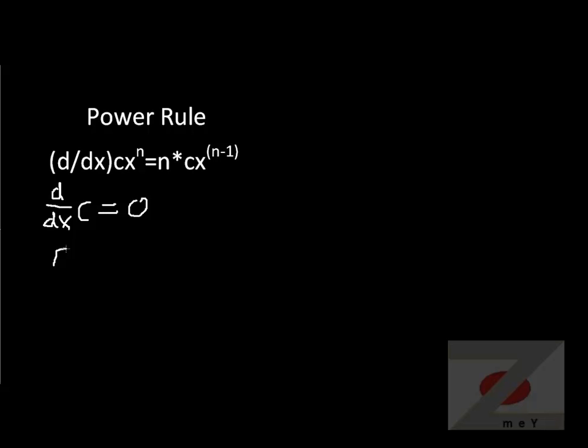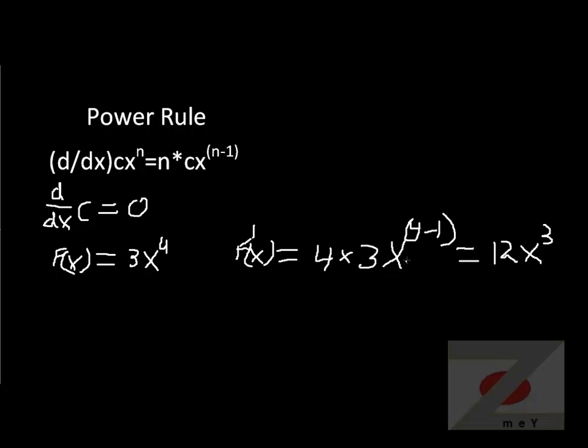Now let's pick a function. Let's call f(x) equals 3x to the fourth power. Now I'm going to call it f prime, which is derivative. f prime equals n, which is 4 as we established, times 3. Then we have x raised to n minus 1 power, therefore 4 minus 1, which equals 12x cubed. This is a basic example of how you perform power rule.